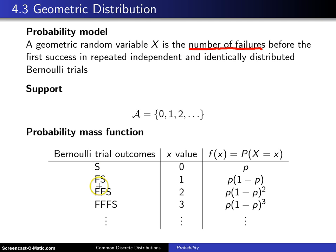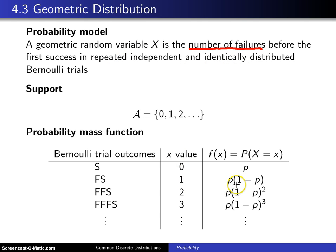The second thing that can happen is you can have a failure followed by a success. When you have a failure followed by a success, then the number of failures before the first success is x equals 1, and because of the independence, we know that occurs with probability 1 minus p — that's the probability of the failure — times p.